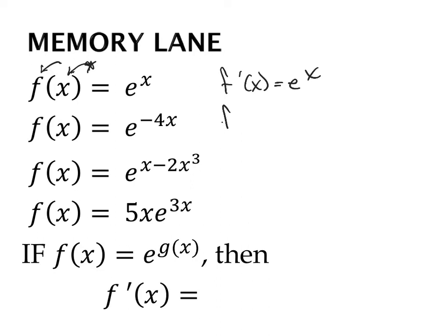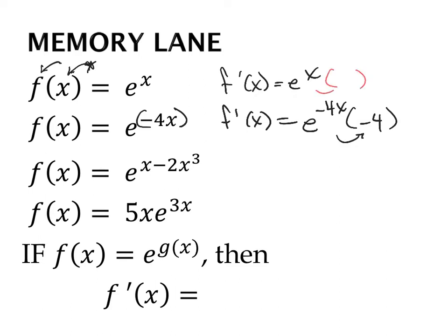You get itself. Now what happens when that function has additional pieces in the exponent besides x? We still keep the function exactly like it is, but now we chain rule out the derivative of the exponent. In reality, we really did chain rule out the derivative of the exponent before too, but that derivative is just 1. So it is the same process — you write the function over again and chain rule out the derivative of the exponent.